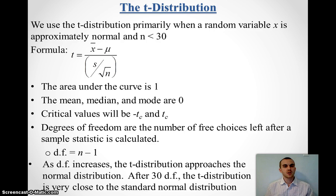Now, the t-distribution, we assume that our random variable is approximately normal, we do not know the underlying population standard deviation, and our sample size is less than 30.